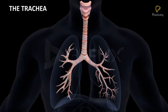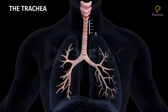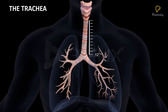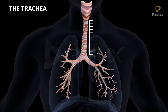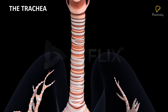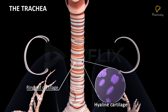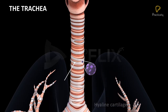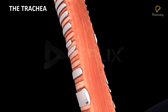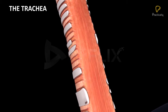The trachea, or windpipe, is a 10–12 cm long straight tube extending up to the mid-thoracic cavity. The wall of the trachea shows the presence of C-shaped hyaline cartilage rings along its length. These rings are incomplete dorsally. They keep the trachea open and prevent it from collapse.